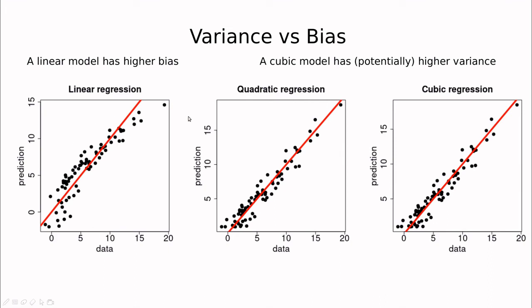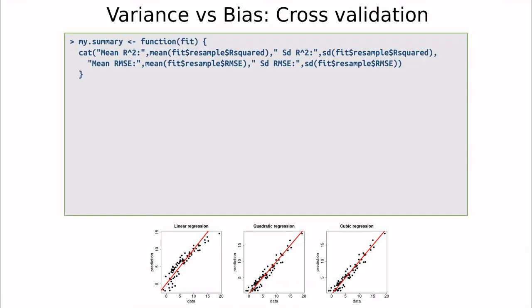If we take a look at the prediction versus the data, clearly the linear regression is performing poorly, but I couldn't tell which one is better between the quadratic and the cubic. So how can we tell? Of course, the answer is, as usual, cross validation.